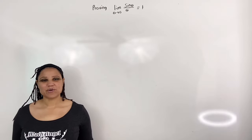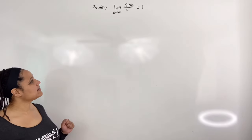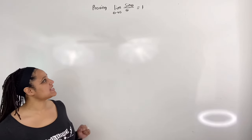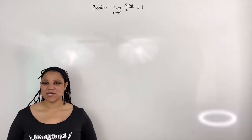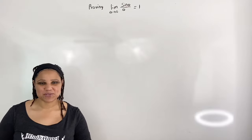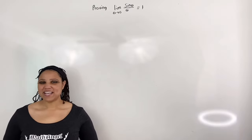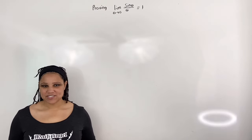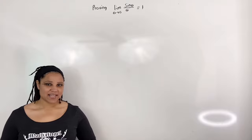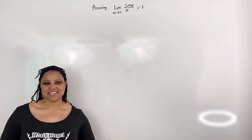In this video, we are going to prove that the limit as theta approaches 0 of sine theta over theta is equal to 1. This is a very important limit in calculus as it will help you find the limit of other trig ratios. It is assumed that you already have an understanding of the unit circle as well as right triangle trigonometry before watching this video.